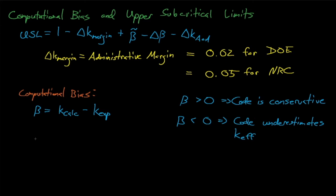Thus, the bias that we usually use in our USL equation, beta tilde, is the minimum of 0 and the actual computational bias. This means that bias can only cause our calculations to become more conservative. We neglect and do not take credit for any positive bias when our code overestimates a system's eigenvalue.